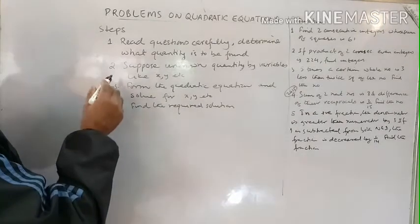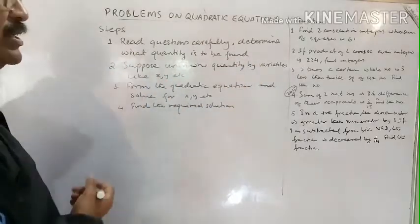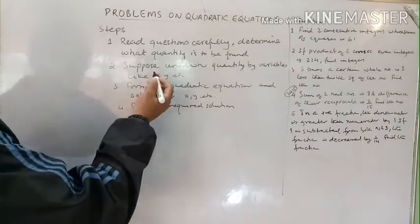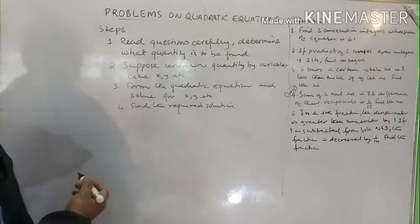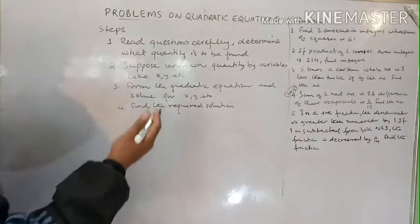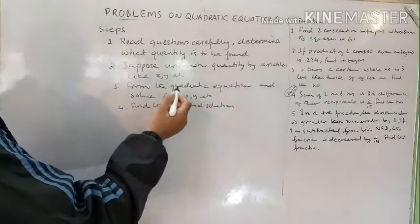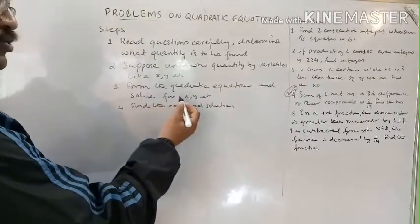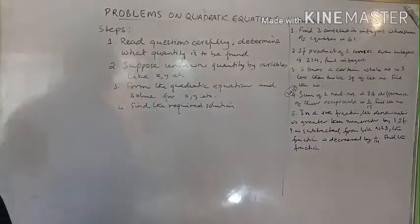Once you know what quantity is to be found, suppose that quantity using variables. If there is one quantity, you can suppose x; if there are two quantities, try to express both in terms of x. After supposing the quantity as x, see what things are given equal in the question, equate them, and form the quadratic equation. Solve for x, and if there is a y, find that too.